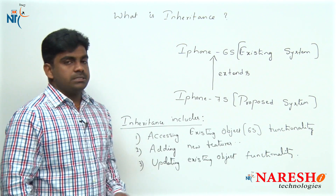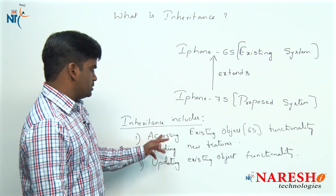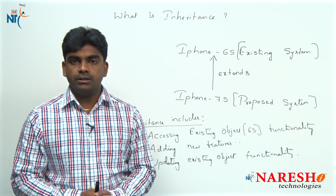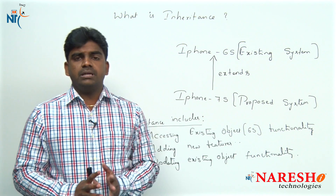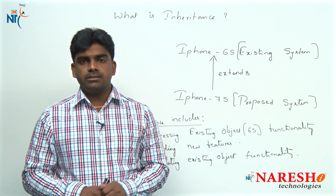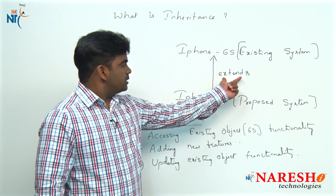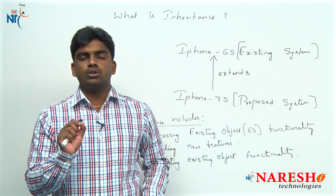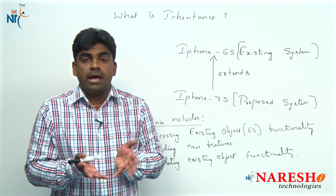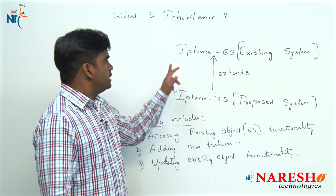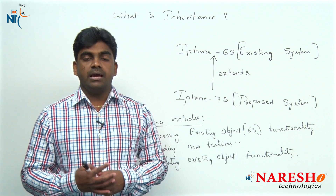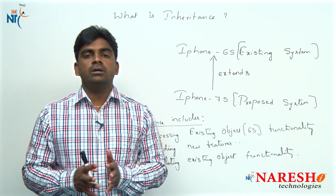These are the main features of inheritance: accessing existing functionality, adding new features, and updating existing object functionality if required. Inheritance is not only about accessing parent functionality in the child class — that is completely wrong. The keyword 'extends' is very clear — it is not a synonym of 'access', it is a synonym of updation, releasing the next version, elaboration, adding new features, enhancement. iPhone 6s is enhanced to iPhone 7s.